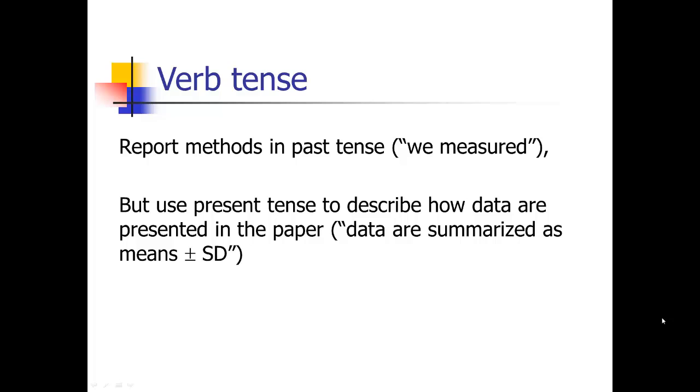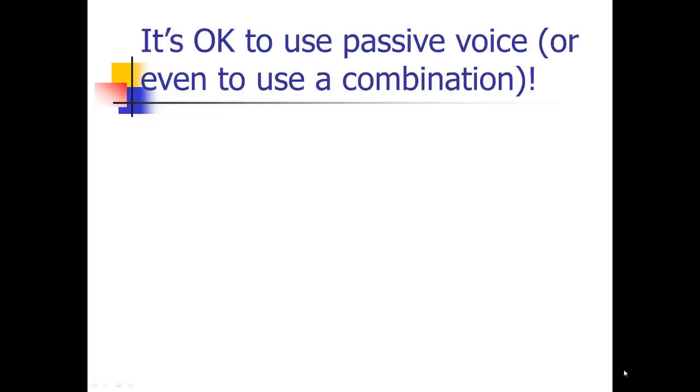But again, same as before with the results section, you're going to use the present tense to describe how the data are presented in the paper, because when the reader reads the paper, they're still presented in that way. You would say 'data are summarized.' Notice the passive voice there. You might have passive voice in the method section. 'Data are summarized as means and standard deviation' or 'Table 1 shows.' That's going to be in the present tense because the data still are there, they're still presented in that way, they're still showing that. Everything that's about the analysis of the data is already completed, however. That would be in the past.